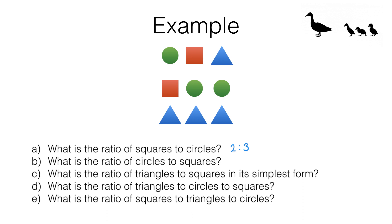Notice question B is almost the same as question A except we have swapped the circles and squares around, so the ratio of circles to squares is simply going to be 3 to 2. With ratios the order matters, so 3 to 2.